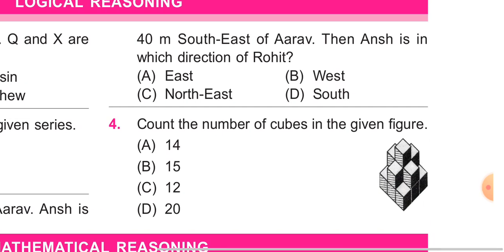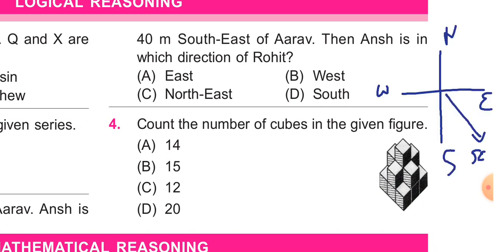Rohit is 40 meters southwest of Arav, so here is Rohit. Ansh is 40 meters southeast of Arav. So Ansh is in the East direction. The option East is correct.